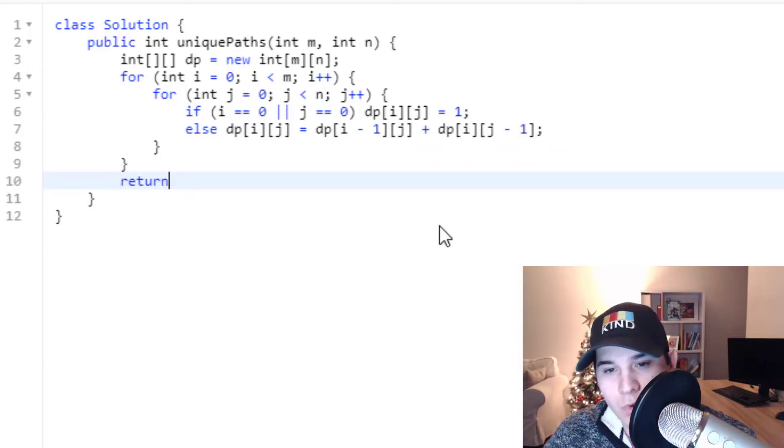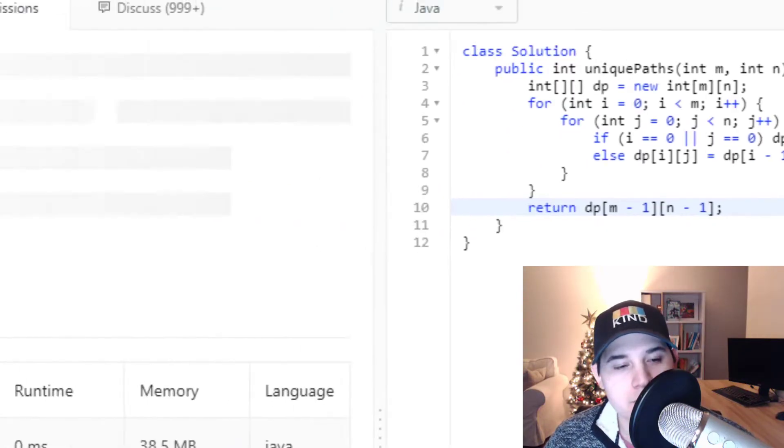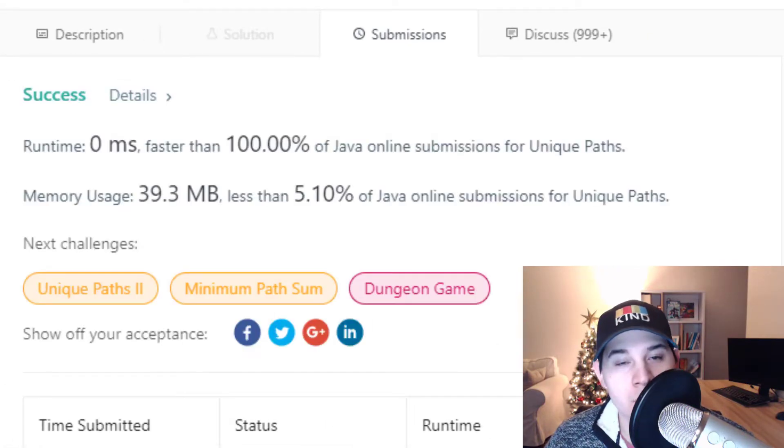And then finally we're going to return the bottom right corner. So that would be dp of m minus one n minus one. So let's make sure that this works. And there we go.